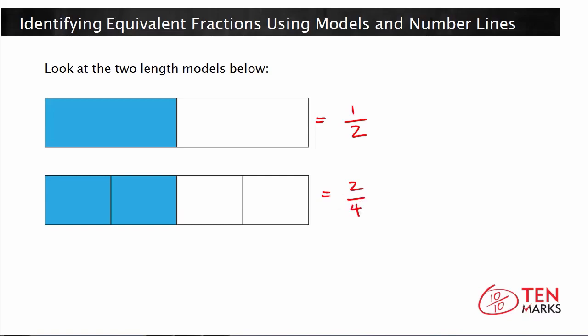Now if you look at the two length models, you will see that the total parts in both add up to the same length. Model 1 shows one part shaded, which is half of the whole, or one out of two pieces. Model 2 shows two parts shaded, which also means half of the whole, because two out of four pieces is half. The blue area is the same amount of space, even though the fractions look different.